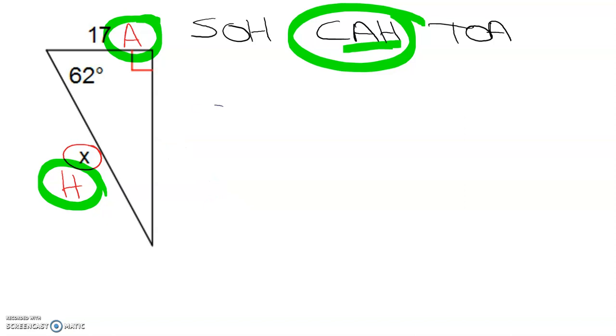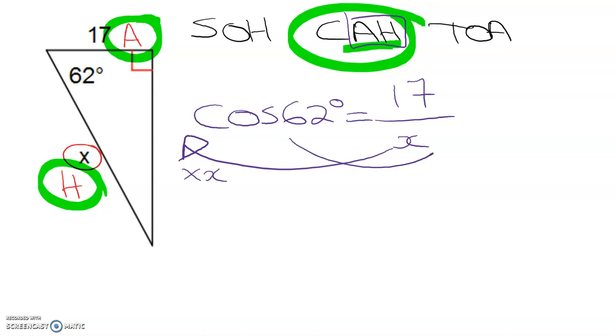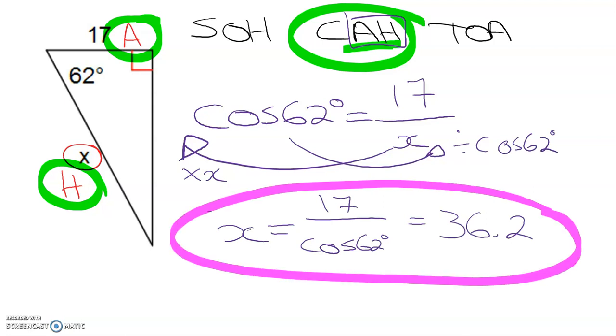Write down the identity so cos of 62 degrees is A over H as given in CAH. So A is 17. H is our unknown so we need to move our X over here by multiplying and divide by cos 62. So your answer is 36.2 which means the length of this line is 36.2 units. If they gave you units you'd be able to put them in. They don't in this one.